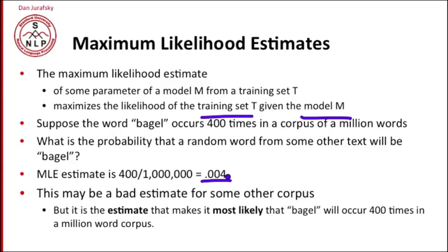So add-one smoothing, and any kind of smoothing, is a non-maximum likelihood estimator. Because we're changing the counts from what they occurred in our training data to hope to generalize better.